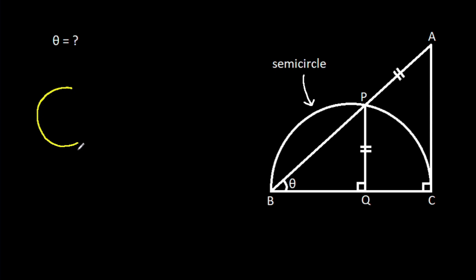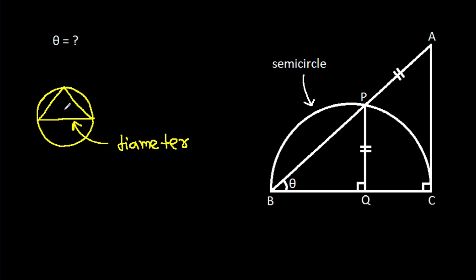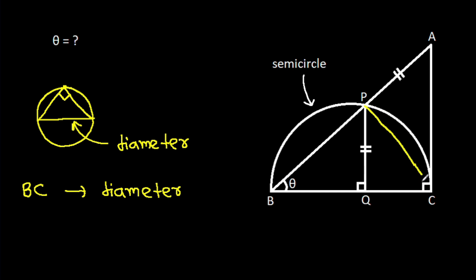In any circle, the diameter makes an angle of 90 degrees on the circle. Here BC will be the diameter, so angle BPC will be 90 degrees. Therefore, angle APC will also be 90 degrees.